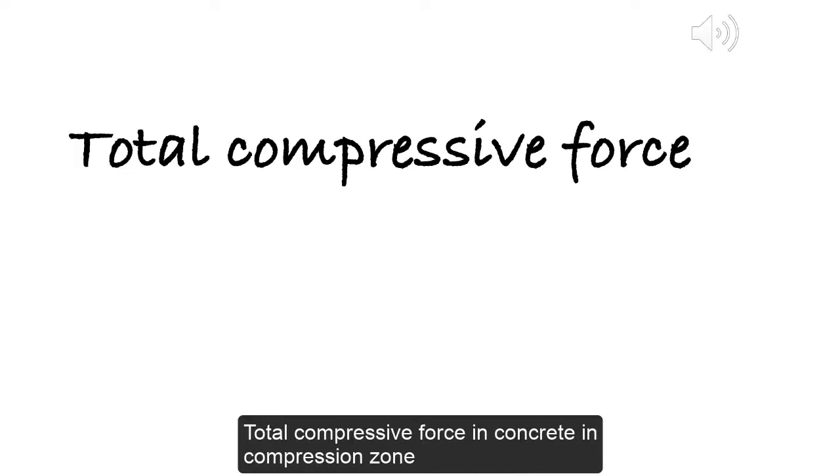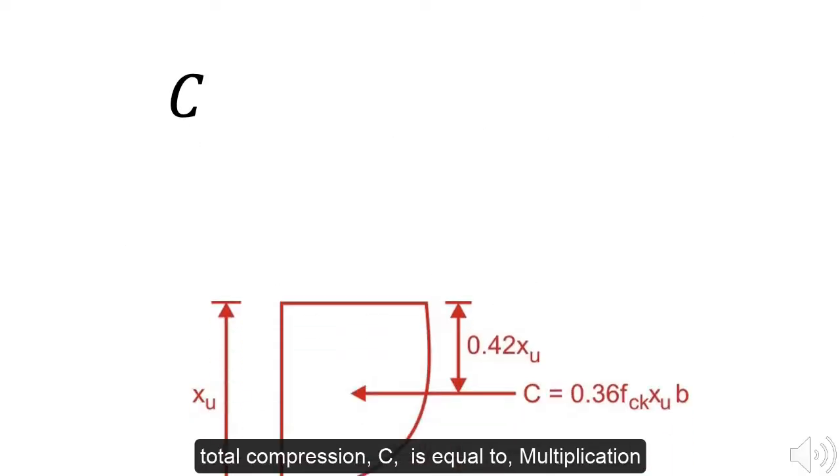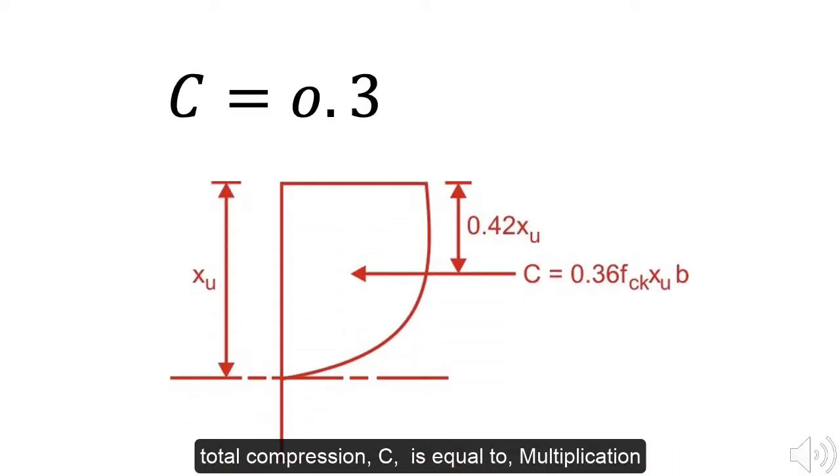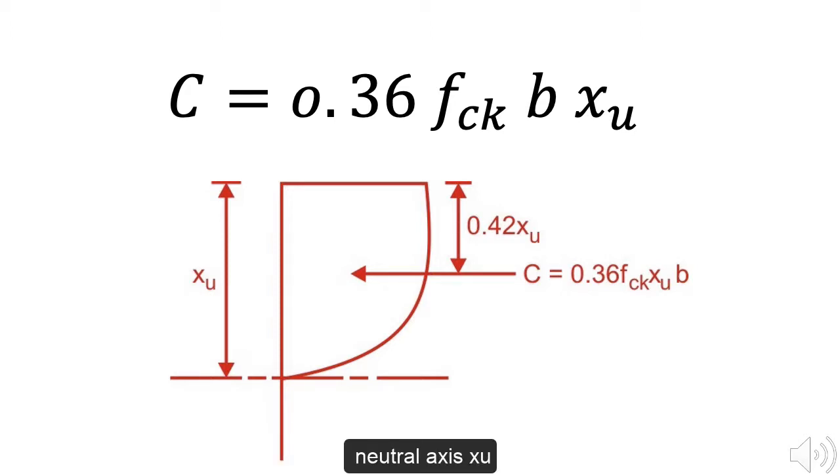Total compressive force in concrete in compression zone at ultimate load, total compression C is equal to multiplication of 0.36, characteristic strength of concrete FCK, width of beam B, and depth of neutral axis XU.